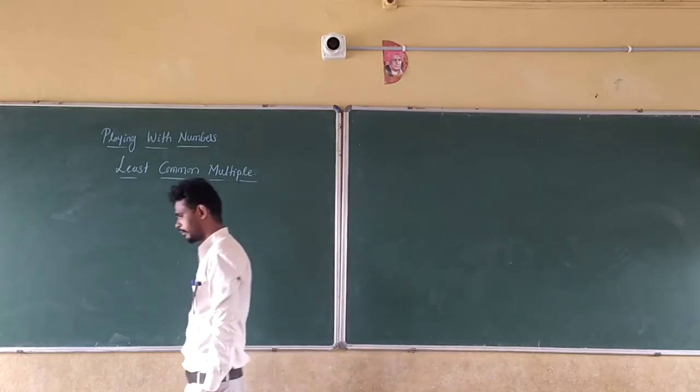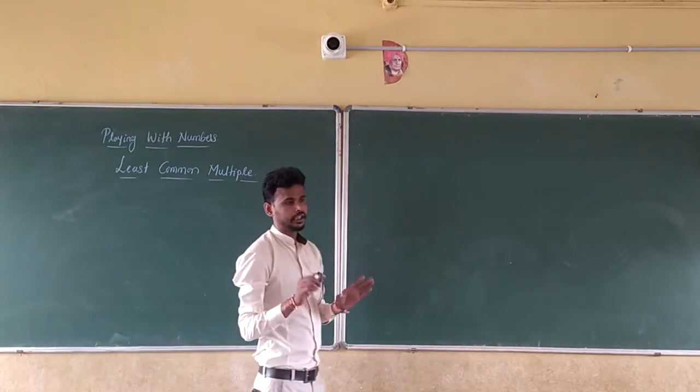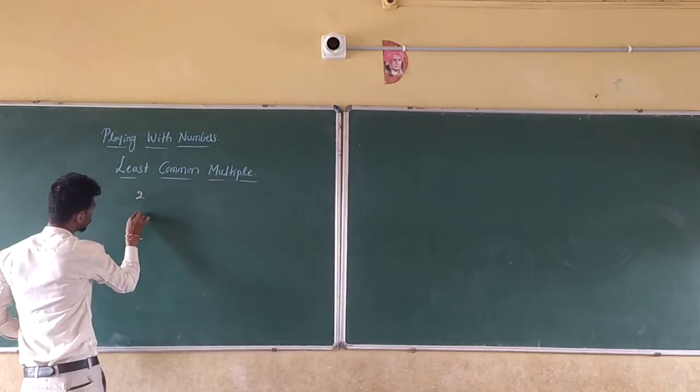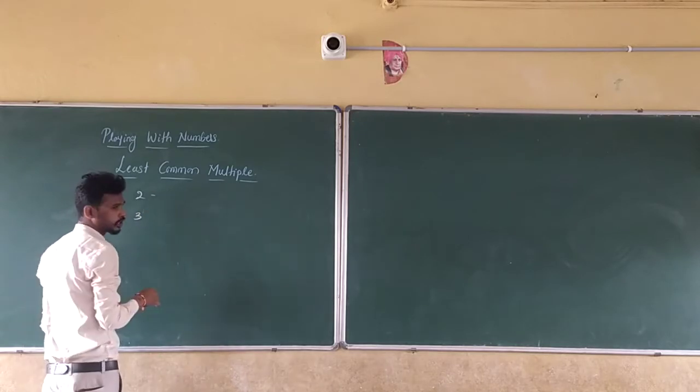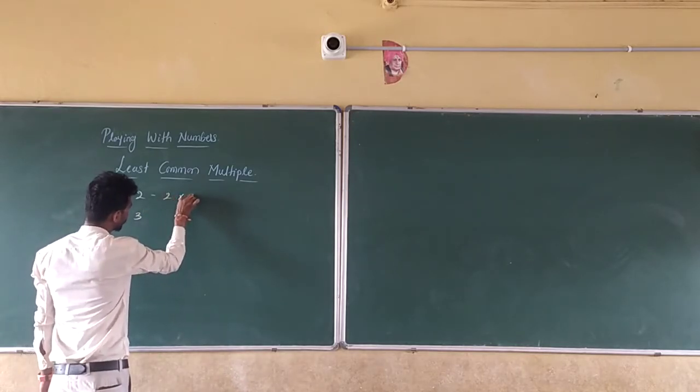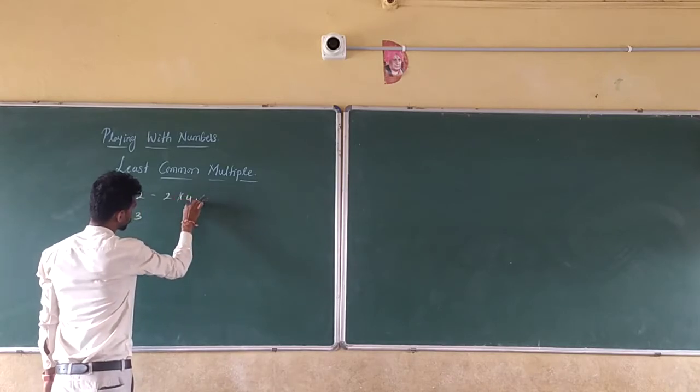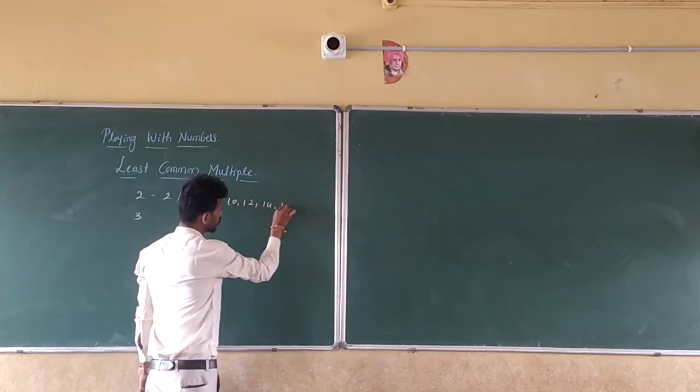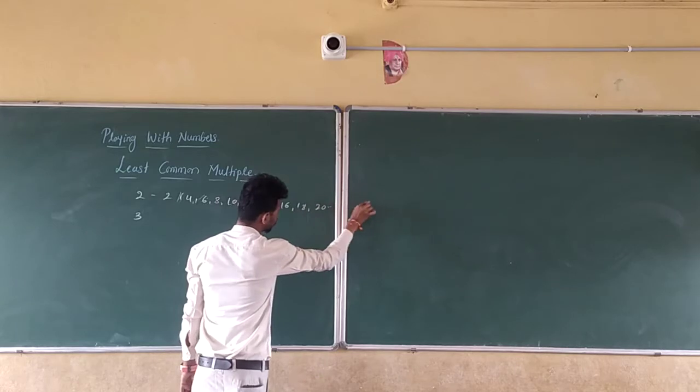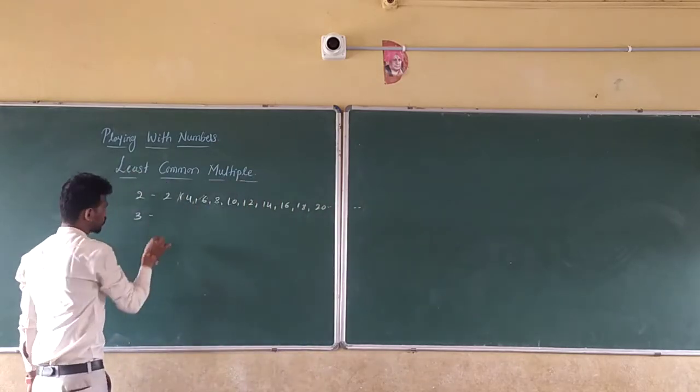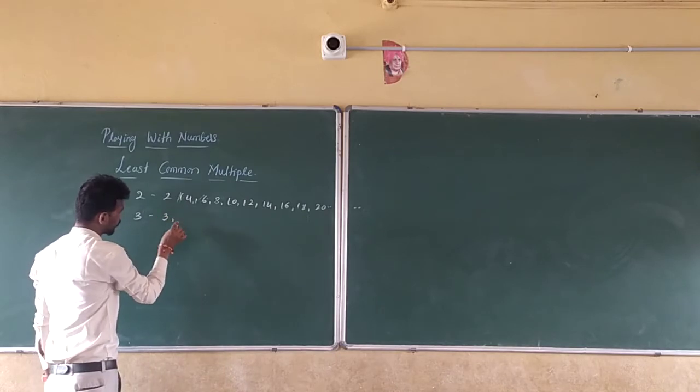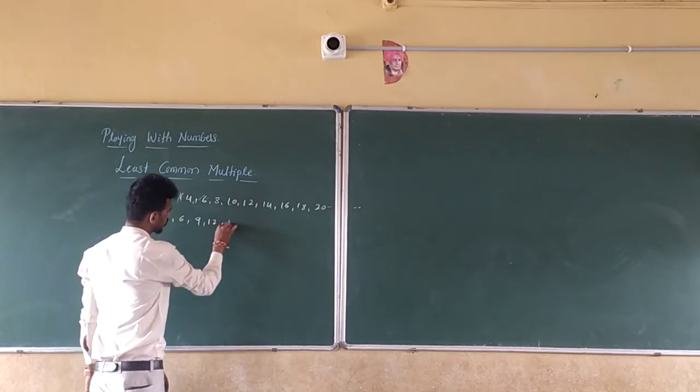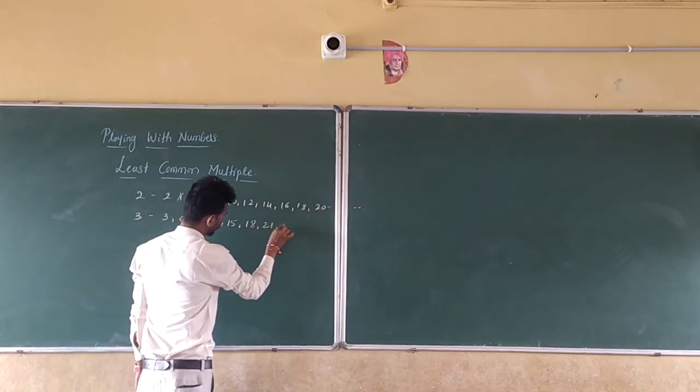So Least Common Multiple means the common multiple of given numbers, the least one. For example, 2 and 3. What are the multiples of 2? 2, 4, 6, 8, 10, 12, 14, 16, 18, 20, and so on. Next, multiples of 3: 3, 6, 9, 12, 15, 18, 21, 24, and so on.